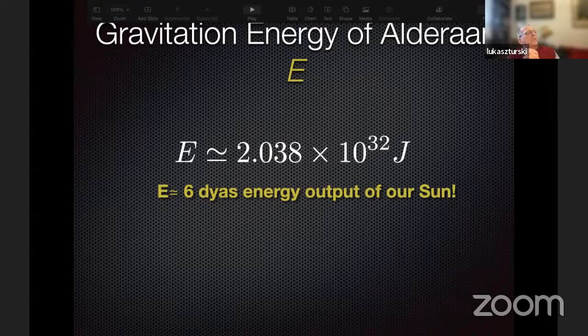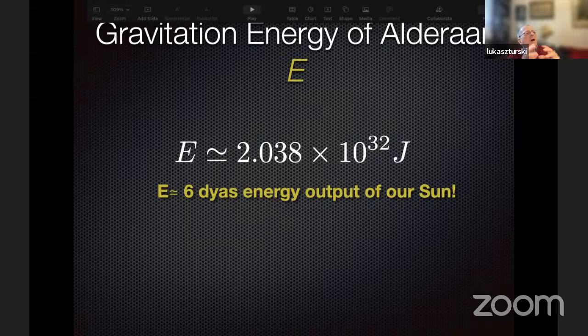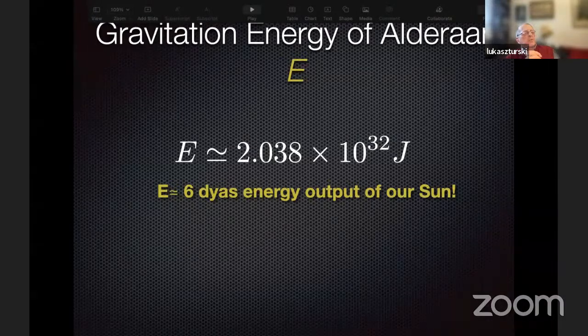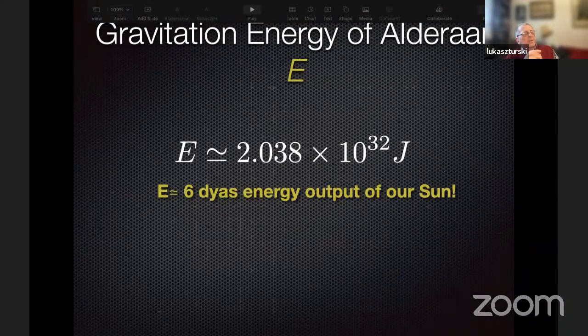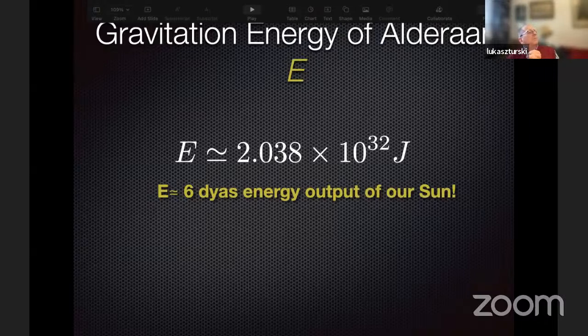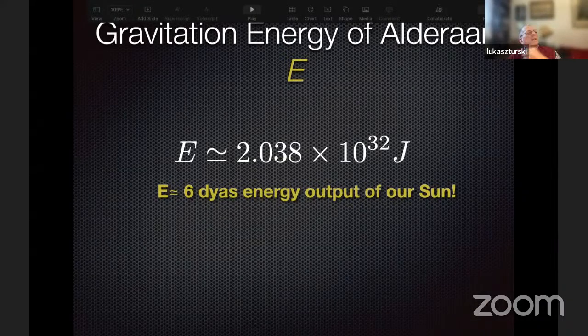We have eight planets plus some junk in the asteroids and everything else in our solar system. The planets are different, but if you do the calculation and take into account that giant planets are less dense than Earth, then roughly the gravitation energy stored in all the planets is roughly six to seven or maybe at most ten days of the energy output of the Sun.